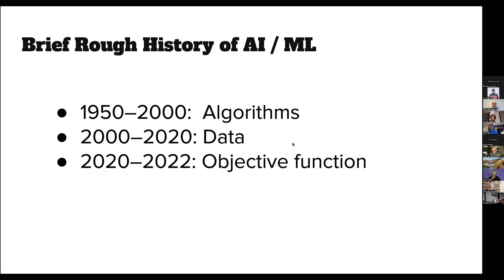My rough history of AI and machine learning: from the birth of the field up to around 2000, we said what really matters is algorithms. Then around 2000, the differentiating factor became data — the era of big data arrived and more data beat out better algorithms for getting better results. In the last couple of years, the emphasis has shifted again to the objective function: what is it that we're trying to optimize? What's fair? How do we trade off preserving privacy versus giving better results? How do we make sure our algorithm for making parole decisions is fair to all subclasses? We've got 50 years of experience making tools for algorithms, decades for data, but not much for really describing what it is that we want.